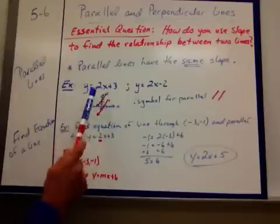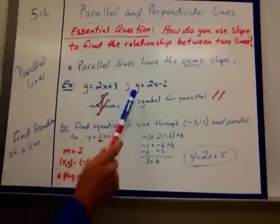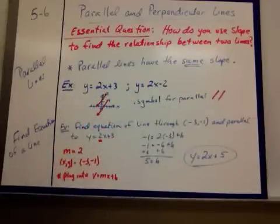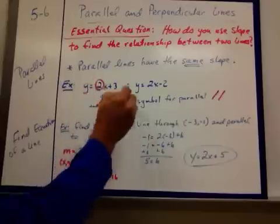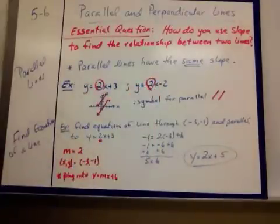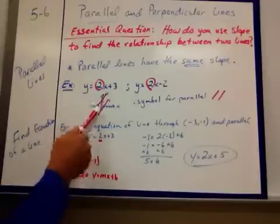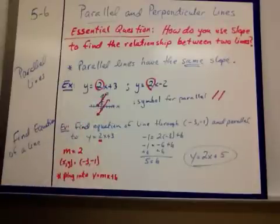So if I gave you this equation here, y equals 2x plus 3 and y equals 2x minus 2, y equals mx plus b, we know that that's our slope right there. So it's 2 for both of them. And you can see when I graph them that they're parallel.